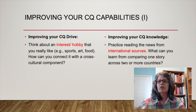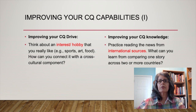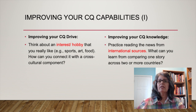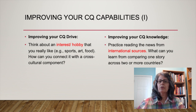Here are some examples of things you can do to improve these two capabilities. You can think of an interest or hobby that you really like — sports, art, or maybe different types of food — and connect this natural interest with a cross-cultural component. For example, if you like food, make a point to visit different types of ethnic restaurants. This will give you exposure to different people from different cultures and insight into certain traditions, expectations, and values.